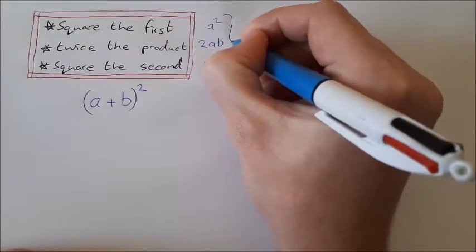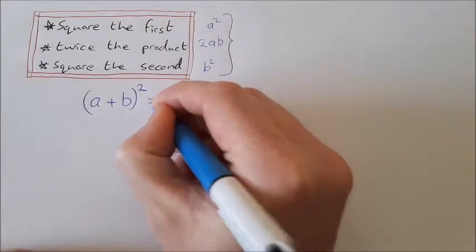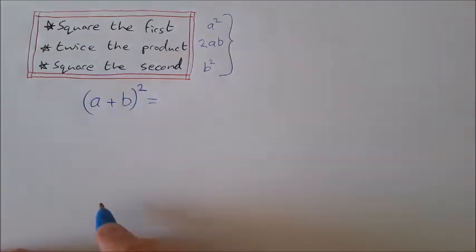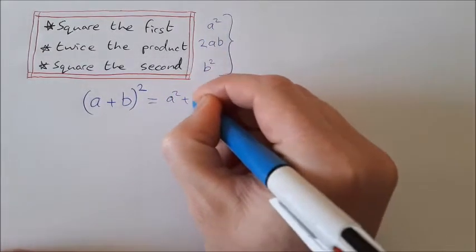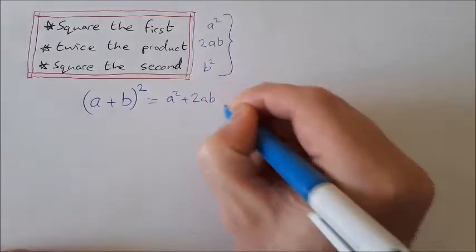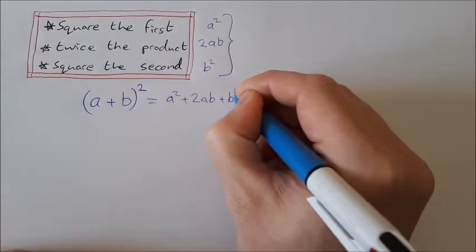So if we put all this together, what do we get? We get (a+b)² = a² + 2ab + b².